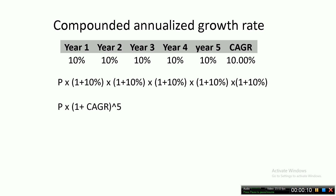Suppose you have an investment that gives you a 10% yearly return over 5 years. If I ask you what is the average return or the average year-on-year growth rate, you would immediately say it's 10%. This is also known as the compounded annualized growth rate, or CAGR. To calculate it, you take the principal P, multiply it by 1 plus 10% five times, and equate it with P into 1 plus CAGR to the power 5. Some people call CAGR the geometric average or multiplicative average.